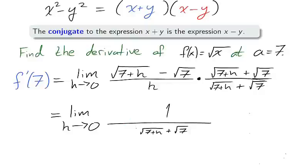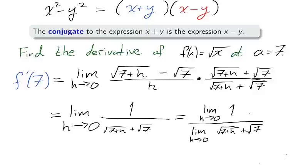Now notice that the limit of the denominator is non-zero. This means that we are in a position to use our limit laws. We use the quotient rule moving the limit into the numerator and the denominator. And using direct substitution with h equals 0 in the denominator, we find that the derivative of the square root of x at 7 is 1 over 2 times the square root of 7.